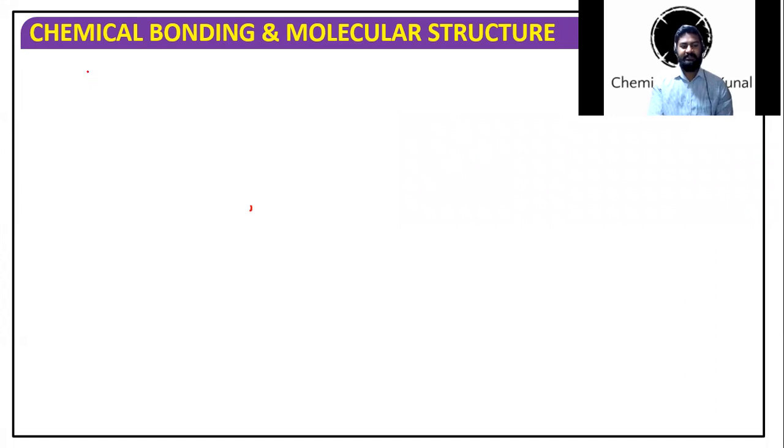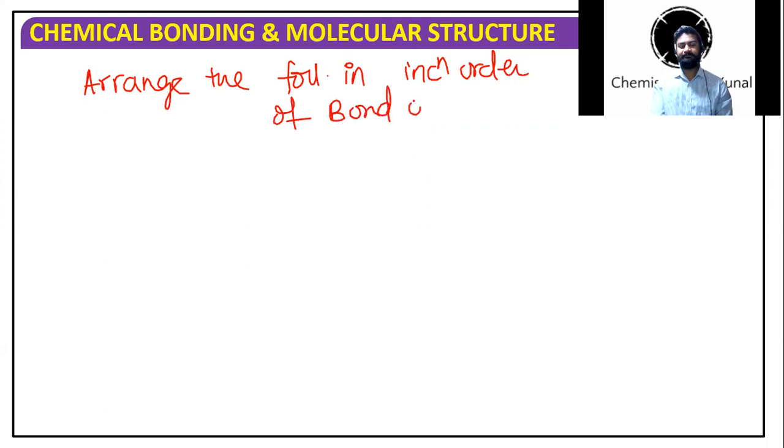So the question is asked: arrange the following in increasing order of bond order. The question suppose given is N2, N2+, N2 2+, N2-. How to do this question? What you have to do is you just need to see how many electrons it has.